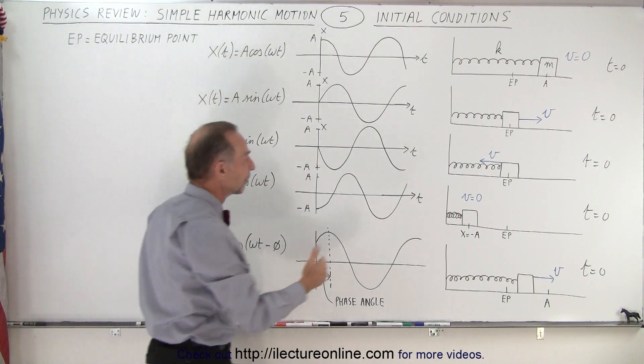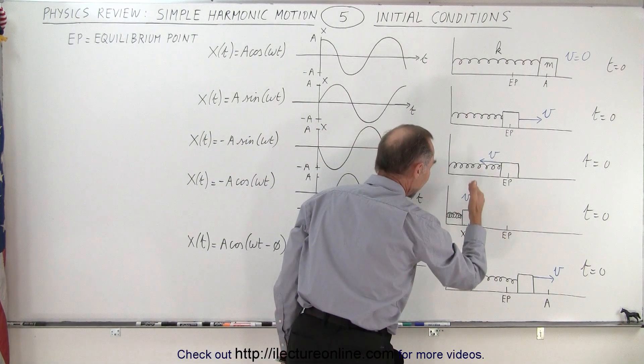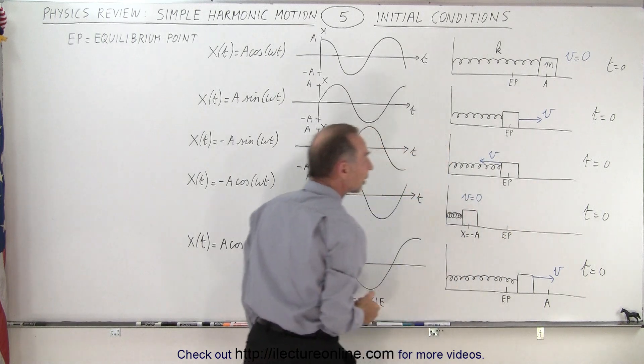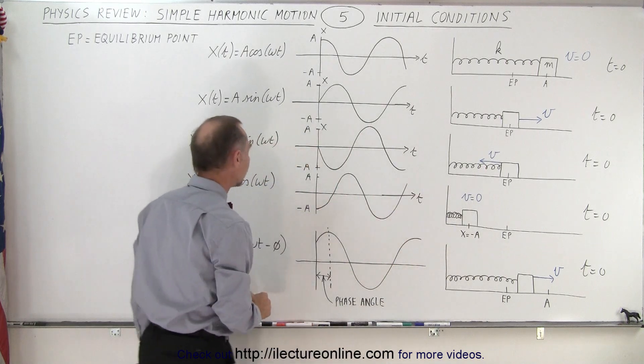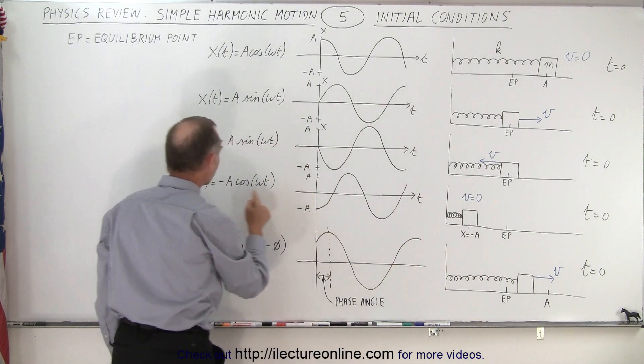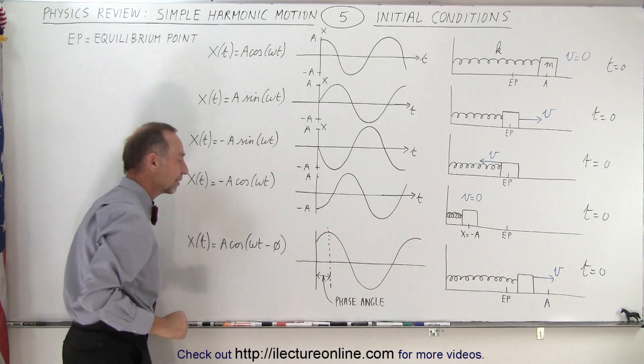If you're at the very farthest point to the left, velocity equals zero. Your position is at the maximum negative amplitude, which means you need the negative A cosine of omega t function.